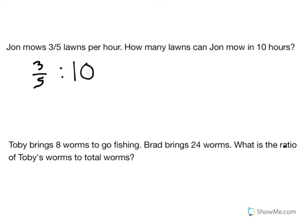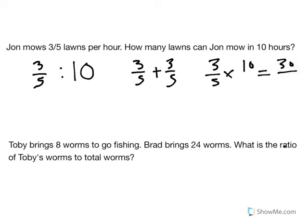So we're comparing three-fifths of a lawn per hour to ten hours. Basically what we're going to do is think of it as adding it up — in one hour he could mow three-fifths, in two hours he could mow another three-fifths. Or we could just multiply three-fifths times ten and find out that the answer is thirty-fifths.